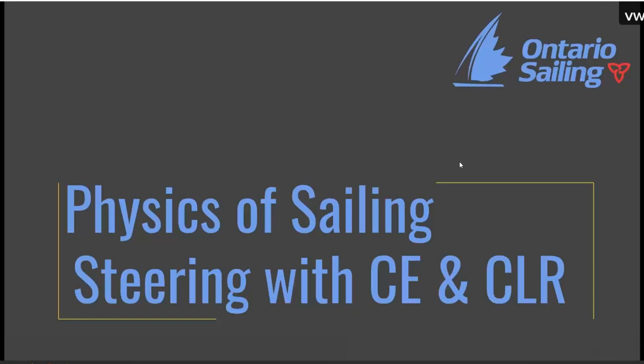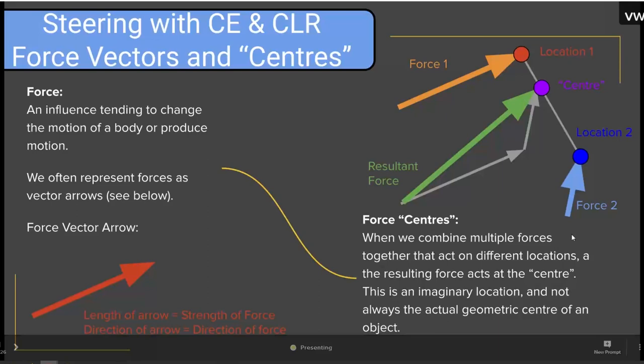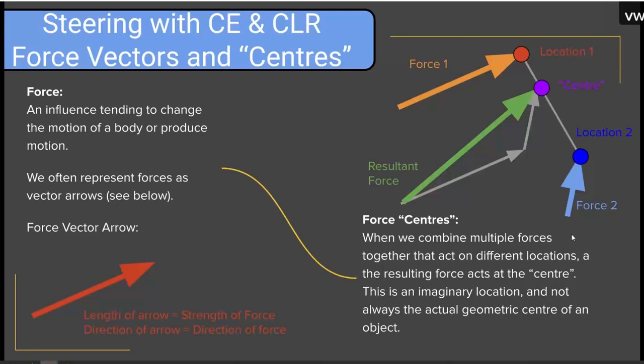This slide has a lot of information on it. We're defining the idea of forces and the idea of force centers. In a graphical sense, we're going to call the force the arrow that represents a pushing or pulling on an object. A force is an influence tending to change the motion of a body or produce motion. Gravity, pressure acting on a sail, and buoyancy are all examples of forces in sailing.